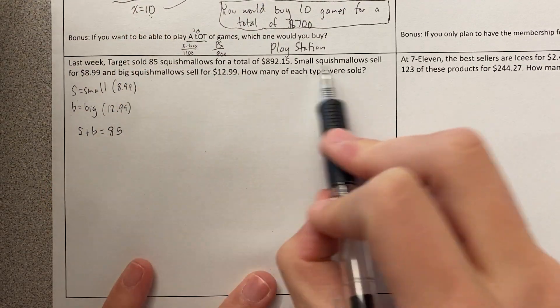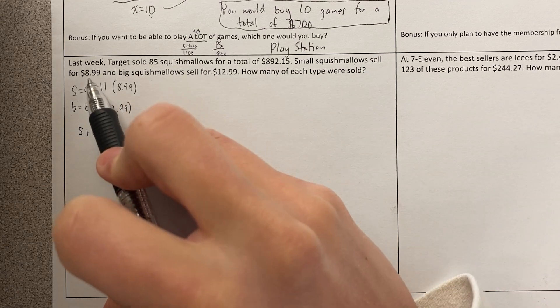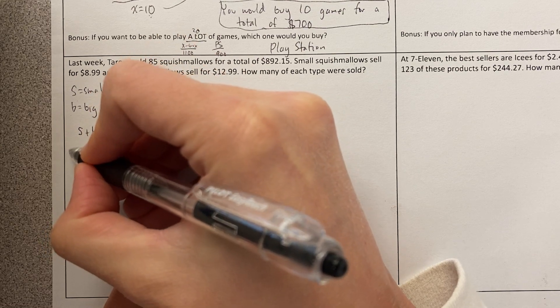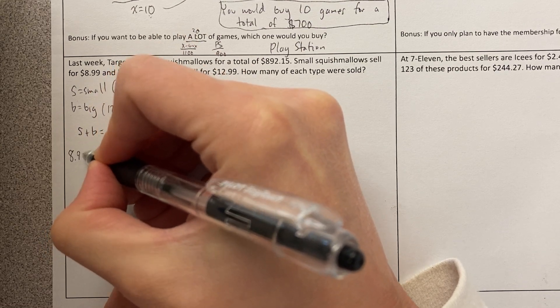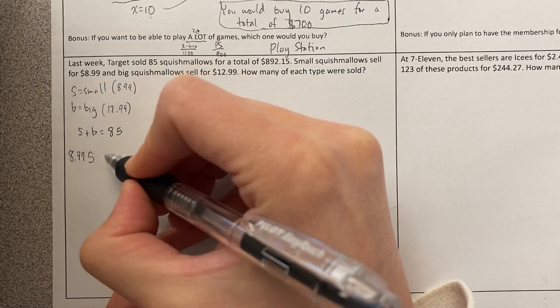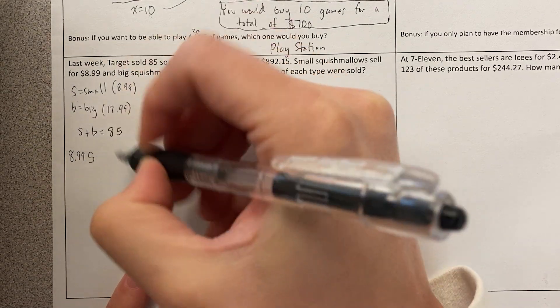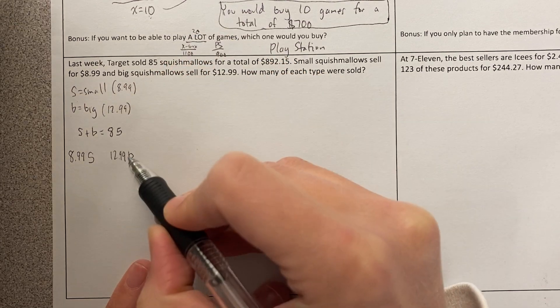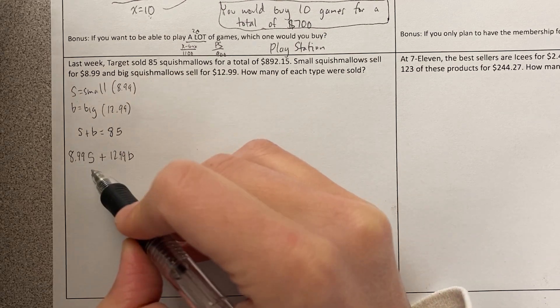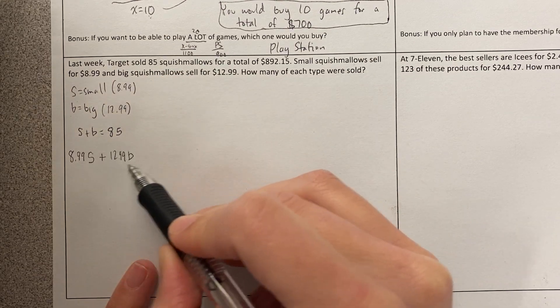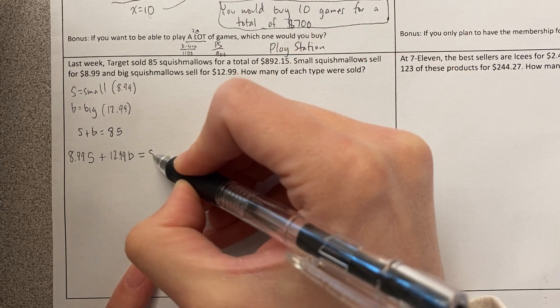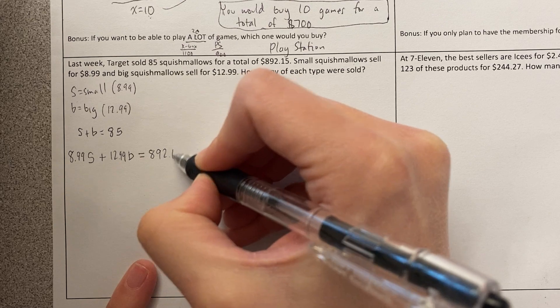Then I know that every time they sold a small Squishmallow, they made $8.99. So I'm going to take the number of small Squishmallows and multiply it by $8.99. And then I'm going to take the number of big Squishmallows and I'm going to multiply that by $12.99. Because every time they sell a big Squishmallow, they sell it for $12.99. Then if I add, this is how much they made selling small Squishmallows. This is how much they made selling big Squishmallows. And if I add up those numbers, the total that they sold was $892.15.